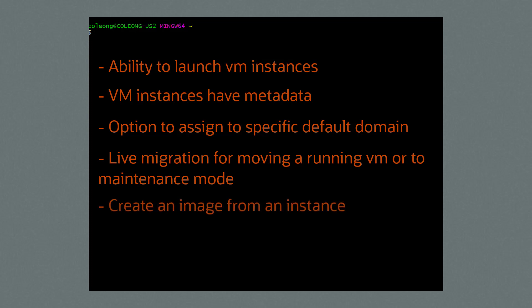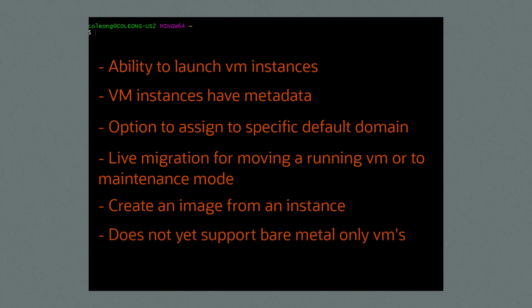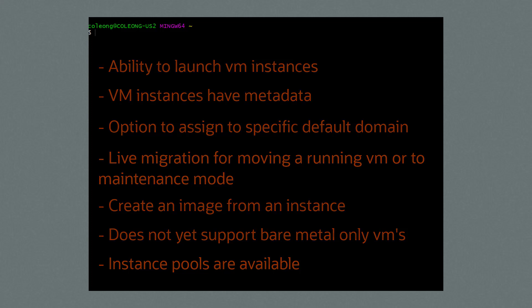You can also create an image from an instance by stopping the instance then copying the volume contents. Currently, Oracle Private Cloud Appliance does not yet support bare metal, only virtual machine instances. And finally, instance pools are available for launching several instances in a group.